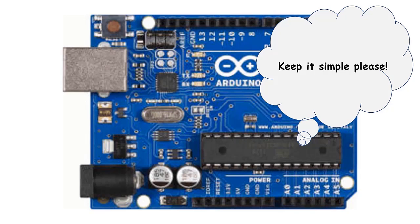When programming the Arduino, or anything else, it is possible to write some pretty complex instructions and get the Arduino to do some really cool things. The problem is that a microcontroller, like the ATmega328 on the UNO, can only execute simple, low-level instructions. These simple instructions include things like add variable A to variable B, or take variable B and put it in register X.